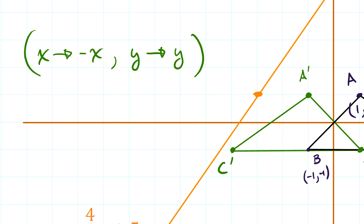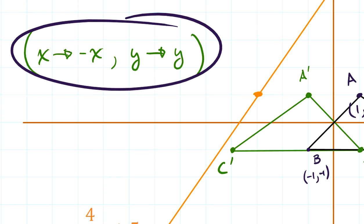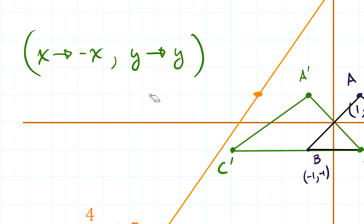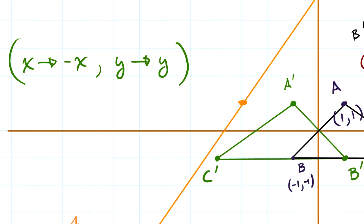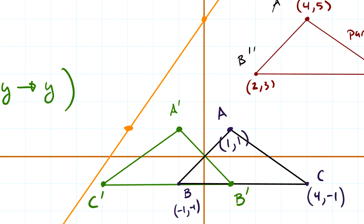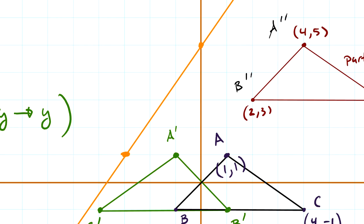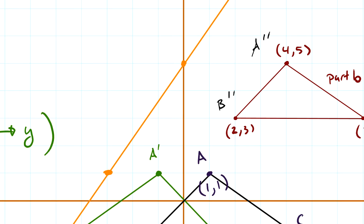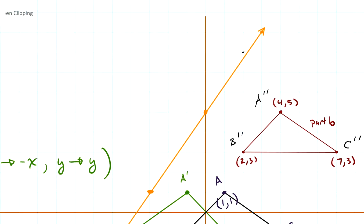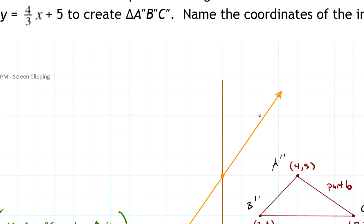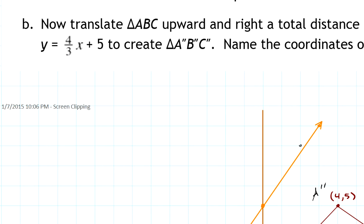So that rule turns out to be — I've got it written in green — a nice way to reflect anything across the Y-axis. The Y values stay exactly the same, but the Xs just become the opposite of what they were. By using this rule we were able to map this triangle as a reflection across the Y-axis. Now the next part says to start with the original triangle A, B, C and slide it 5 units parallel to the line marked in orange.